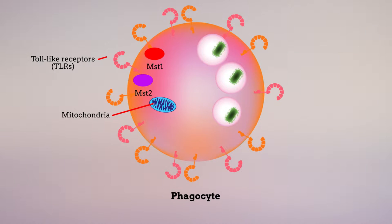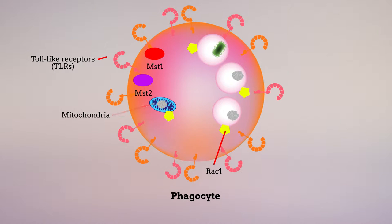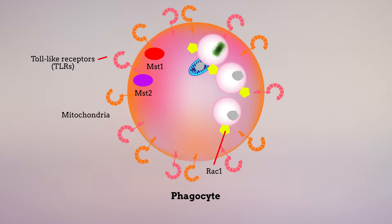Phagosomes produce ROS in response to signaling factors such as RAC1. Mitochondria also generate ROS as a byproduct of energy production. Importantly, RAC1 can induce mitochondria to move near phagosomes through the formation of a complex between phagosomal and mitochondrial proteins. This positioning allows ROS from mitochondria to enter phagosomes, enhancing the destruction of bacteria by phagocytes.